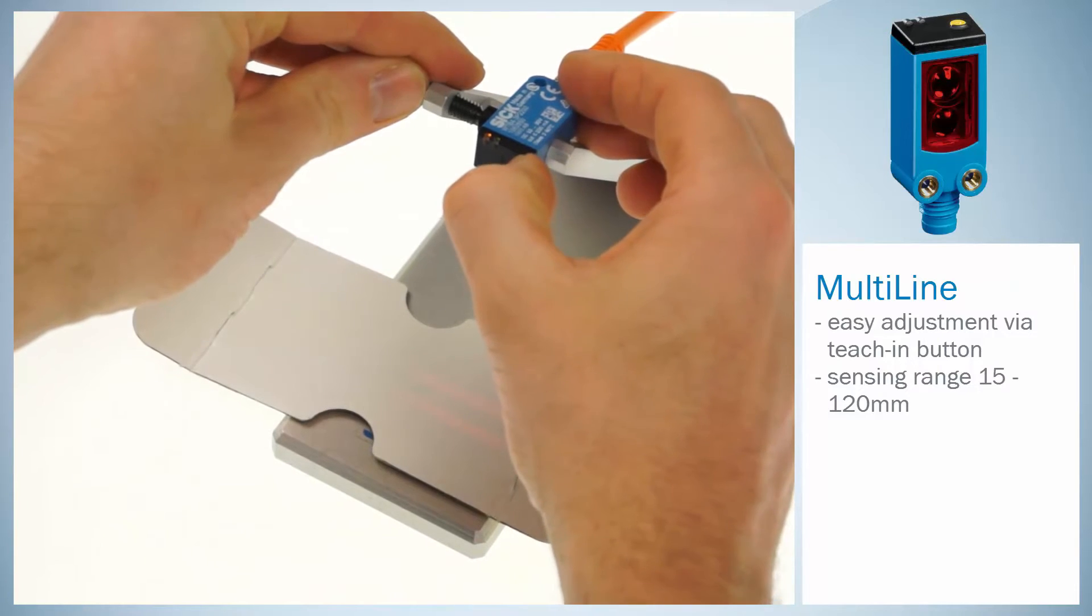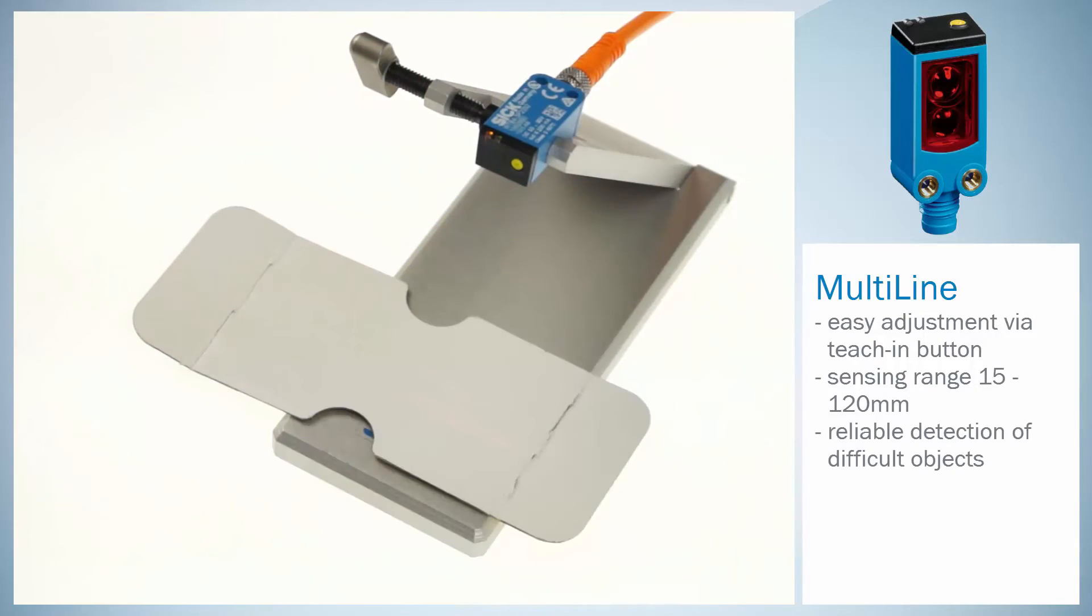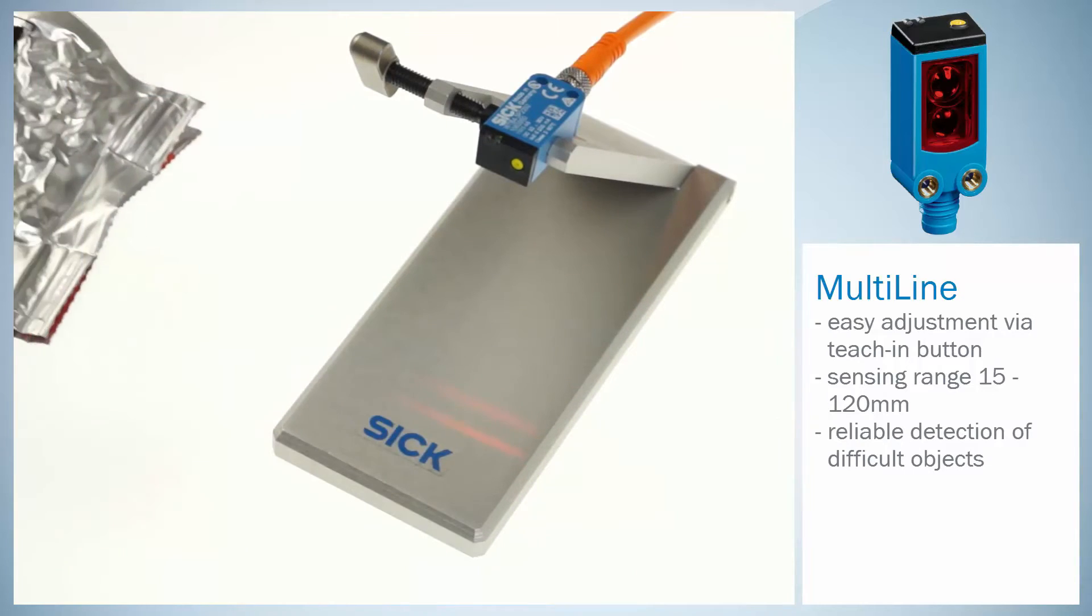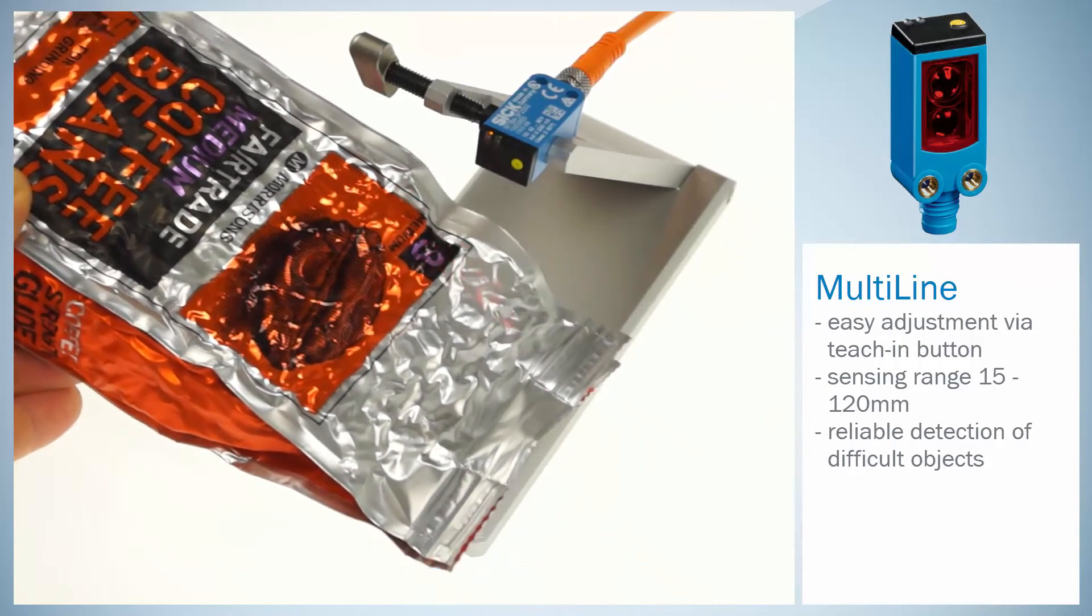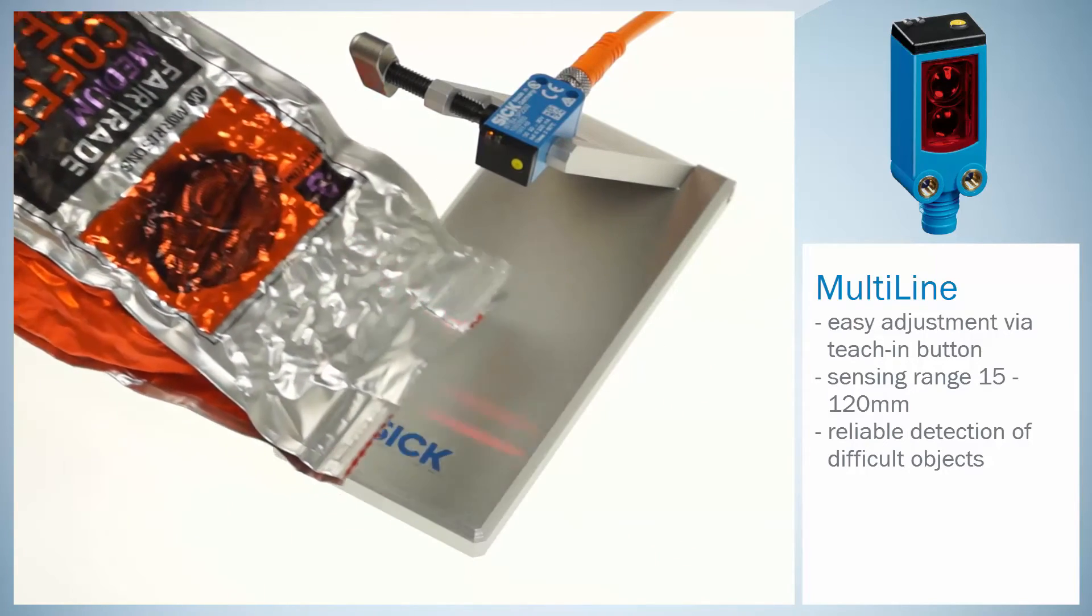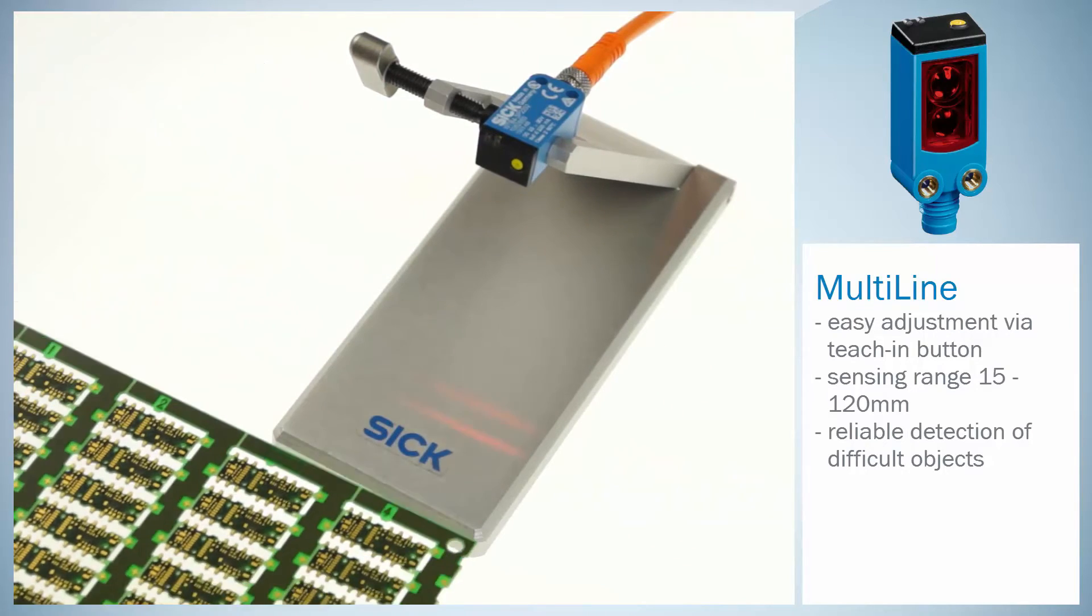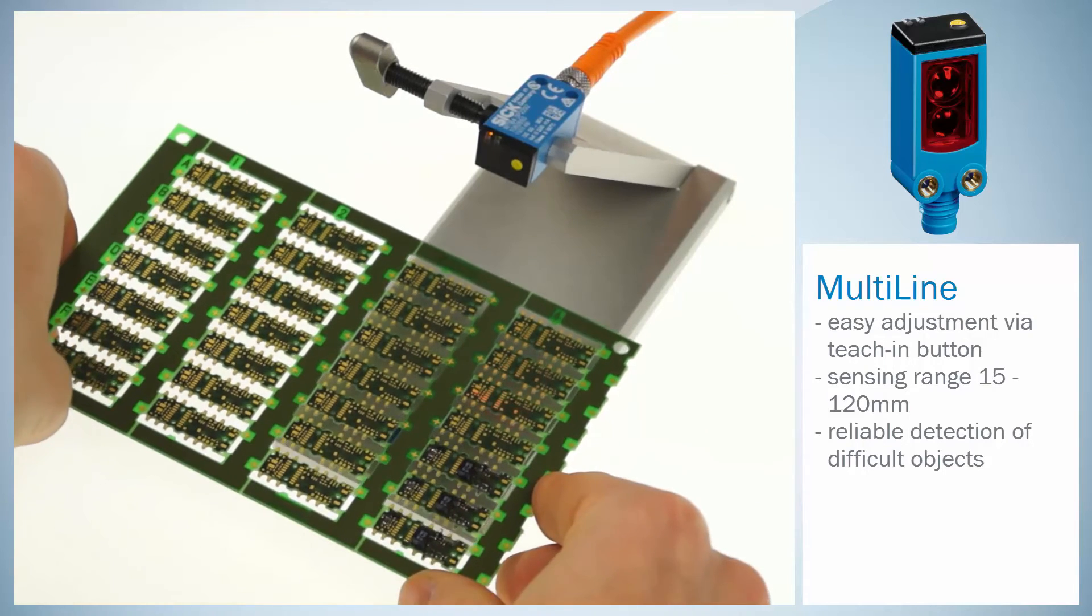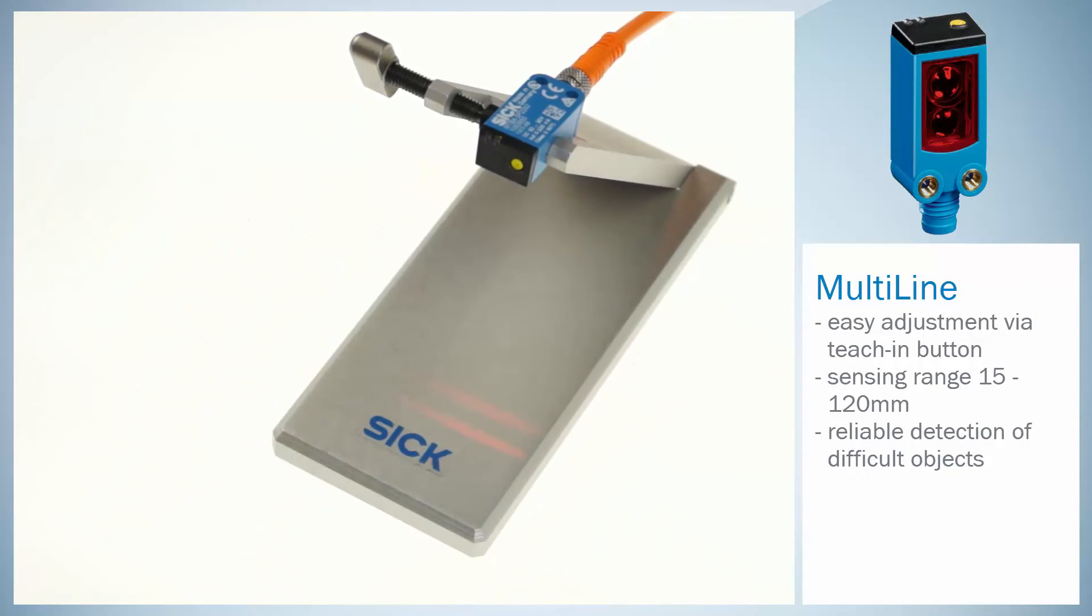By giving you some examples we would like to demonstrate how reliable the multi-line detects objects which are hard to detect, such as reflective coffee packages with irregular surfaces and electronic cards with slots as well as structured forms and surfaces. This is achieved due to its two line-shaped light spots.